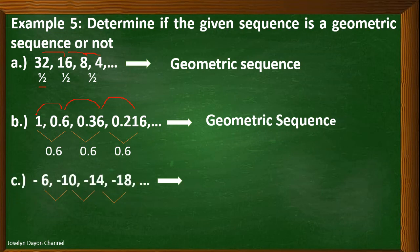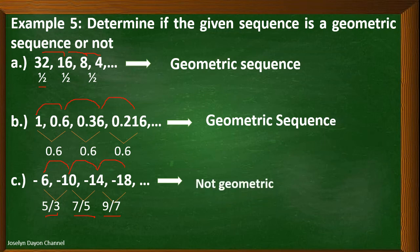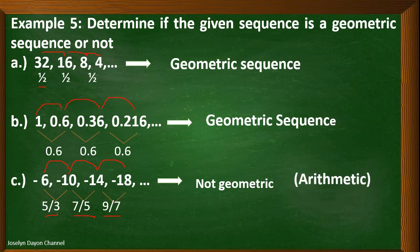Now, let's have the third. We check the common ratio: negative 10 divided by negative 6, written in fraction form, is 5 over 3. Negative 14 divided by negative 10 is 7 over 5. And negative 18 divided by negative 14 is 9 over 7. The ratio is not the same, therefore this is not geometric. But this is an arithmetic sequence, because we get the next term by adding negative 4 to the preceding term — negative 4 is the common difference.